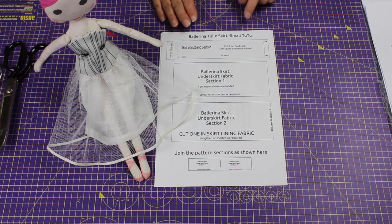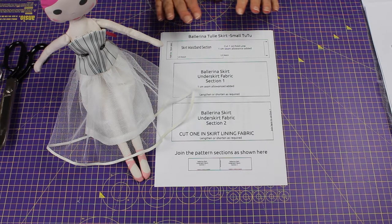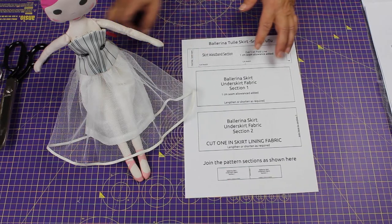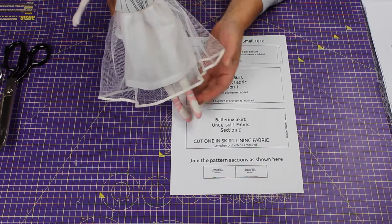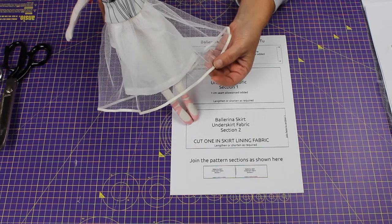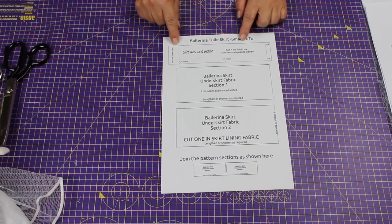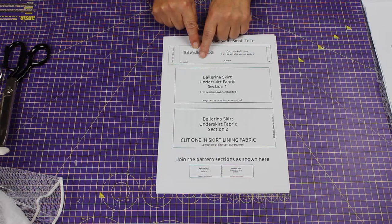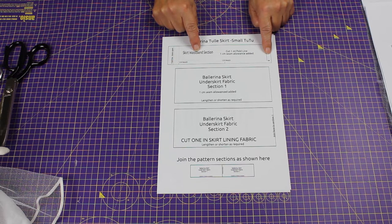Let's take a look at how to make the ballerina tulle skirt, or you can use the pattern to make a small tutu. If you download your PDF, you'll see the skirt waistband section that needs to be cut on a fold in fabric.